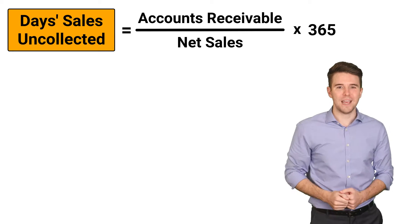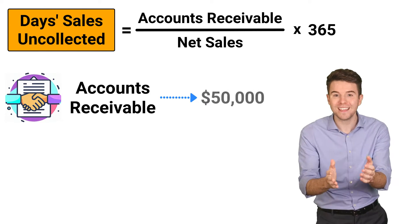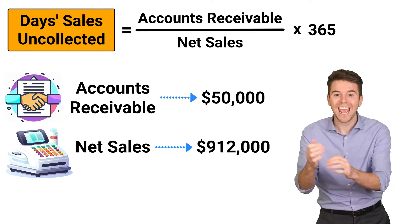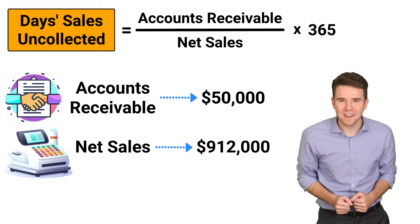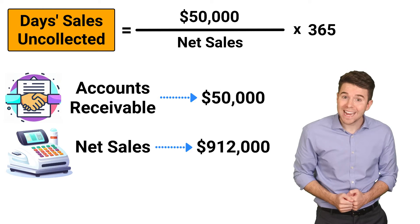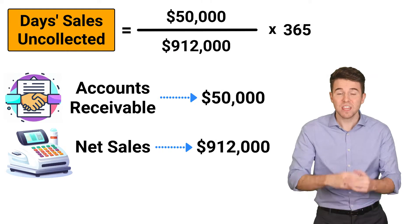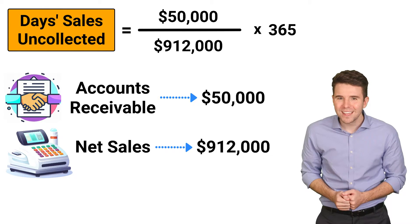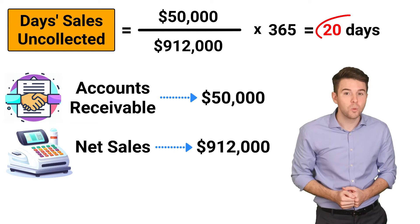Let's walk through this with an example. Assume a company reports accounts receivable of $50,000 and net sales of $912,000 at the end of the year. To compute Days Sales Uncollected, we take accounts receivable of $50,000, divide by net sales of $912,000, and then multiply that by 365. This gets us Days Sales Uncollected of 20 days.